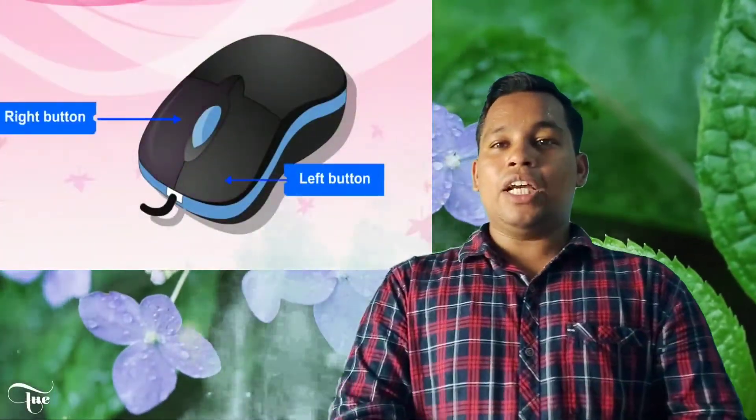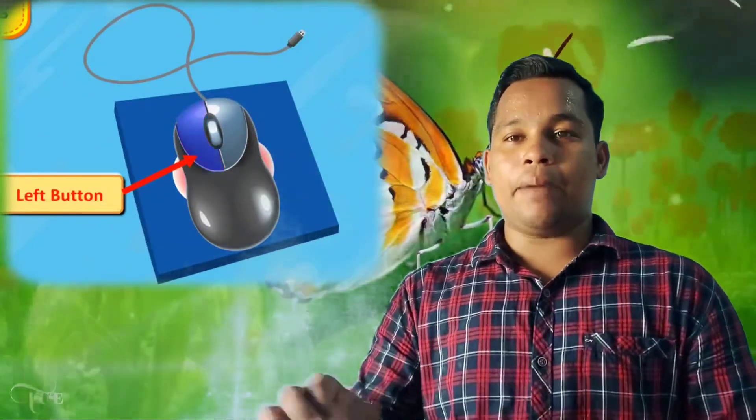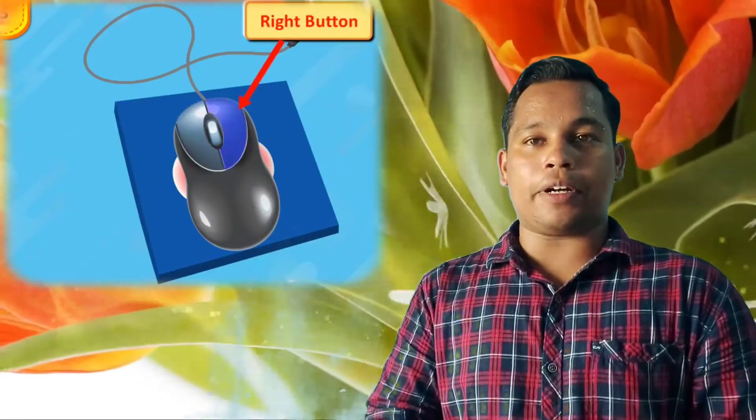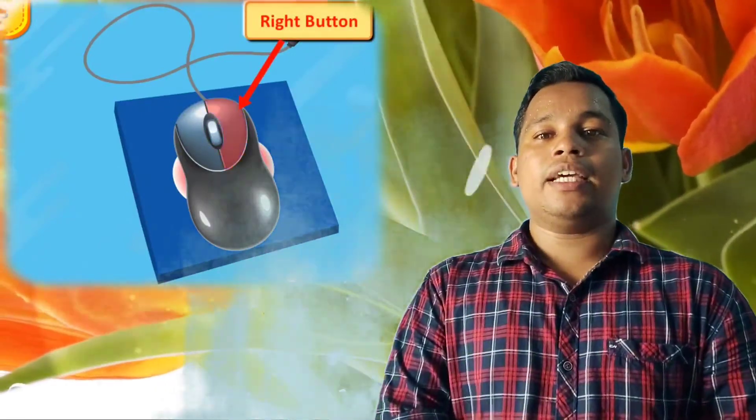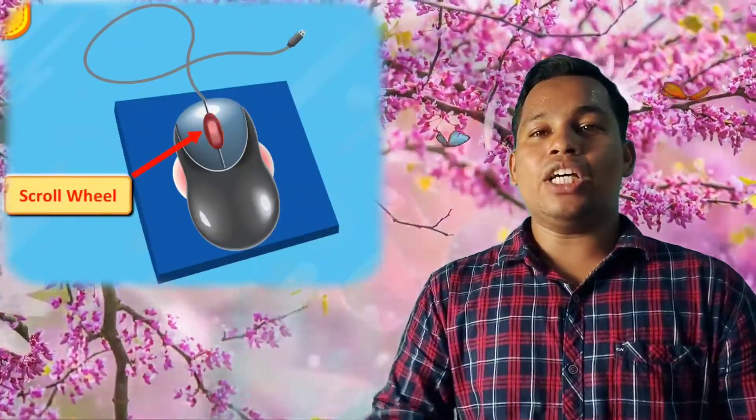The mouse has two or three buttons. The button on the left side is called the left mouse button. The button on the right side is called the right mouse button. The mouse also has a wheel in the center, which is called the scroll wheel.